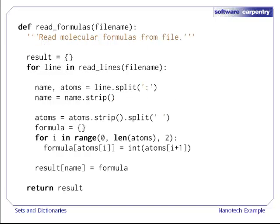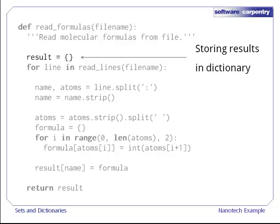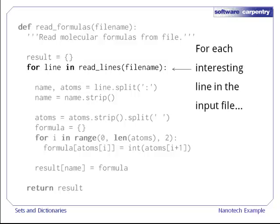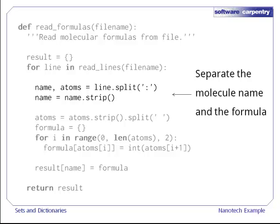Using that same function, reading in a file of molecular formulas is only slightly more complex. We create the dictionary we're going to store the results in, and then for each line in the file that has some data, we split on the colon to separate the molecule's name, which may contain spaces, from its formula.